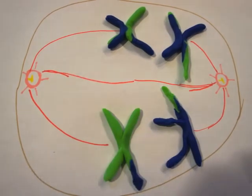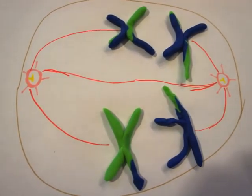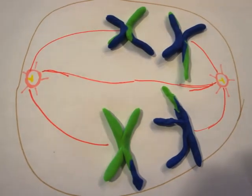Anaphase I is similar to its mitotic cousin. Tetrads are pulled apart toward the centrioles at either pole via the kinetochore connections. In other words, the homologous pairs are split up.